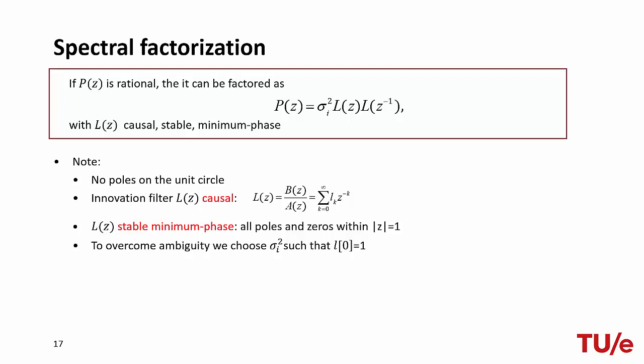Moreover, to avoid any ambiguity due to possible different gains, we choose the variance of the input noise such that the first filter coefficient is equal to 1.